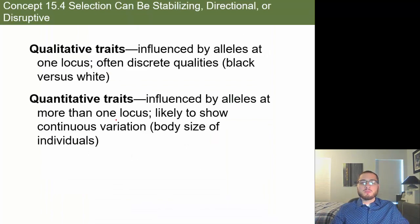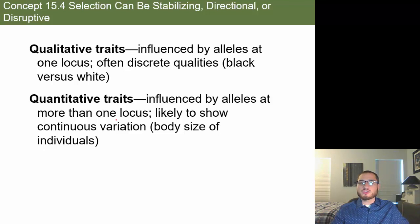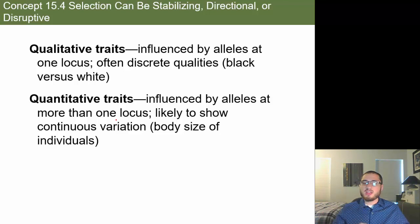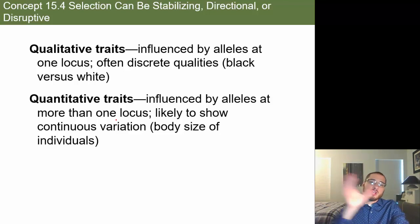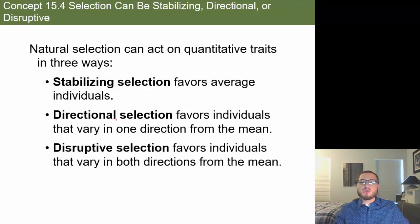In natural selection, we look at qualitative traits versus quantitative traits. Qualitative traits are influenced by alleles at one locus and tend to be discrete — like black versus white. Quantitative traits show continuous variation, such as body size — not black versus white, but a continuous range like 5'4", 5'5", 5'6", 5'7". Many factors influence quantitative traits.